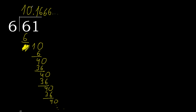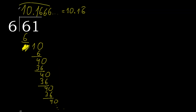Therefore finish it. 61 divided by 6 is here: 10, and after the point, 6 repeating. Therefore like this: 6 repeating — or written like this with the repeating notation.